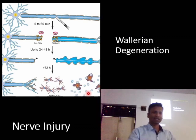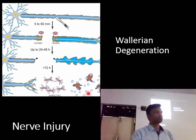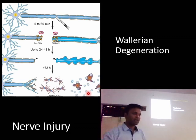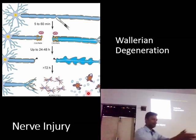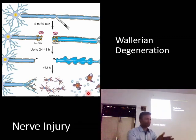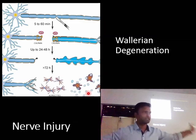There is a catch: the endoneurium should be intact, otherwise these proliferating endings will flare up. If the endoneurium is present, it acts as a guide to grow in the correct direction. Whereas if the endoneurium is totally cut, the proliferating endings will spread out.